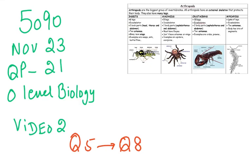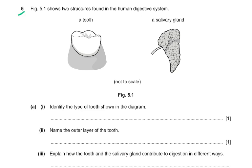Bismillah Rahman Rahim. This is the 5090 November 2023 question paper 2, and this is the second video in which we are going to be doing questions 5 to 8. Starting with question number 5: figure 5.1 shows two structures found in the human digestive system — a tooth and a salivary gland — not to scale.